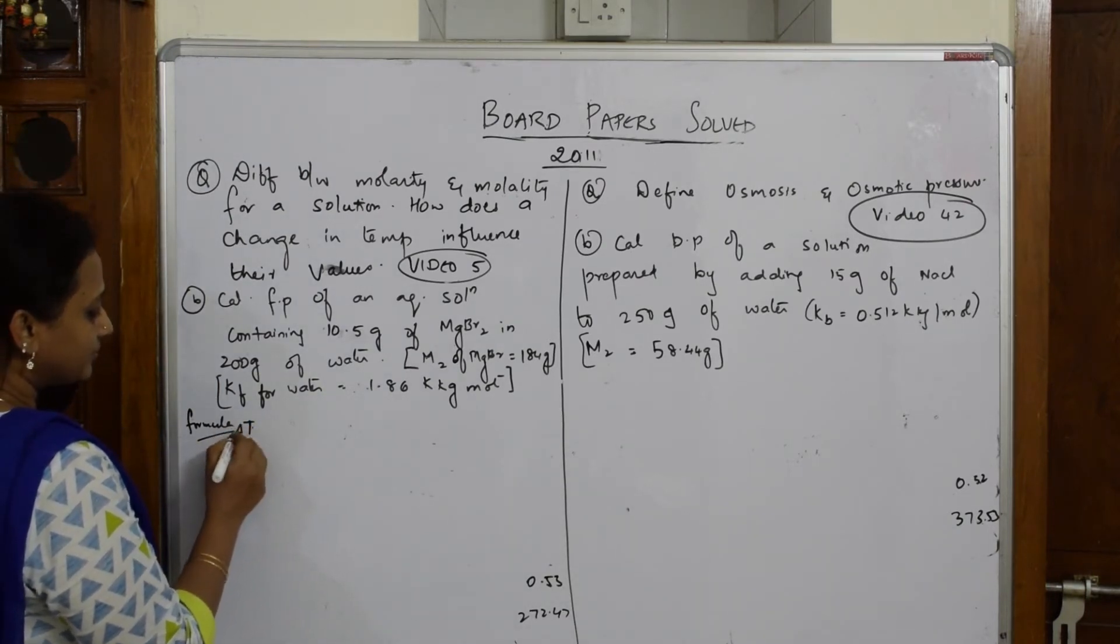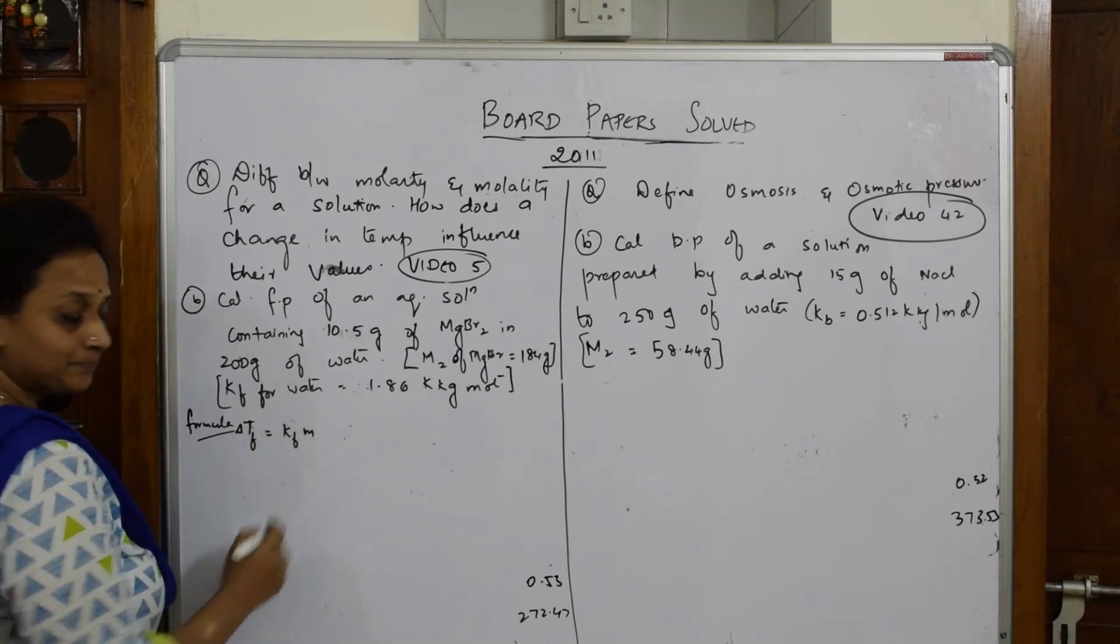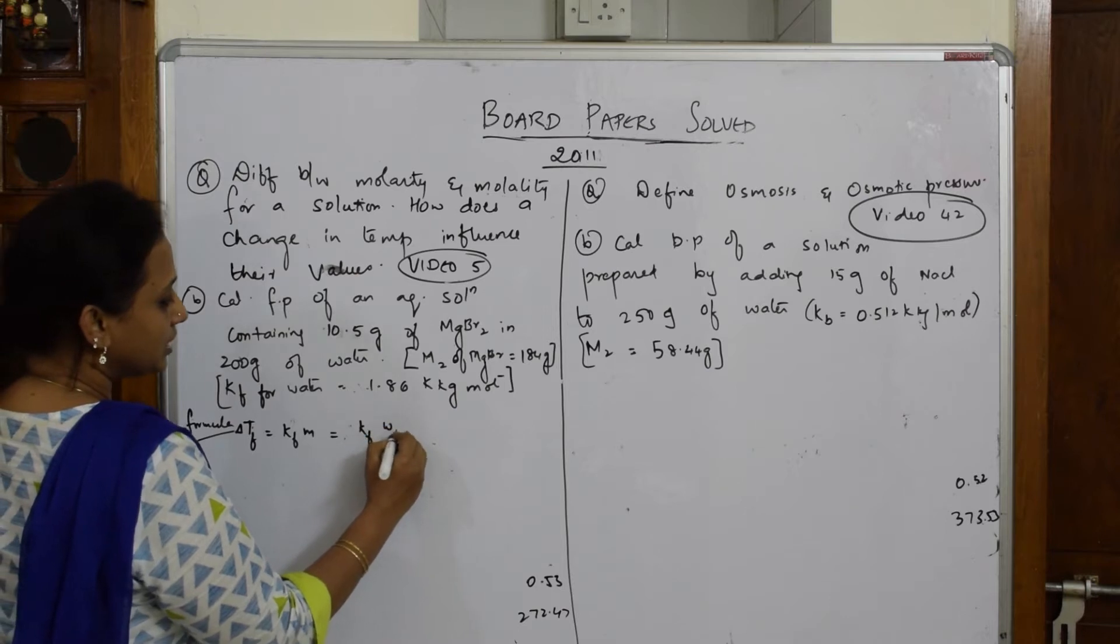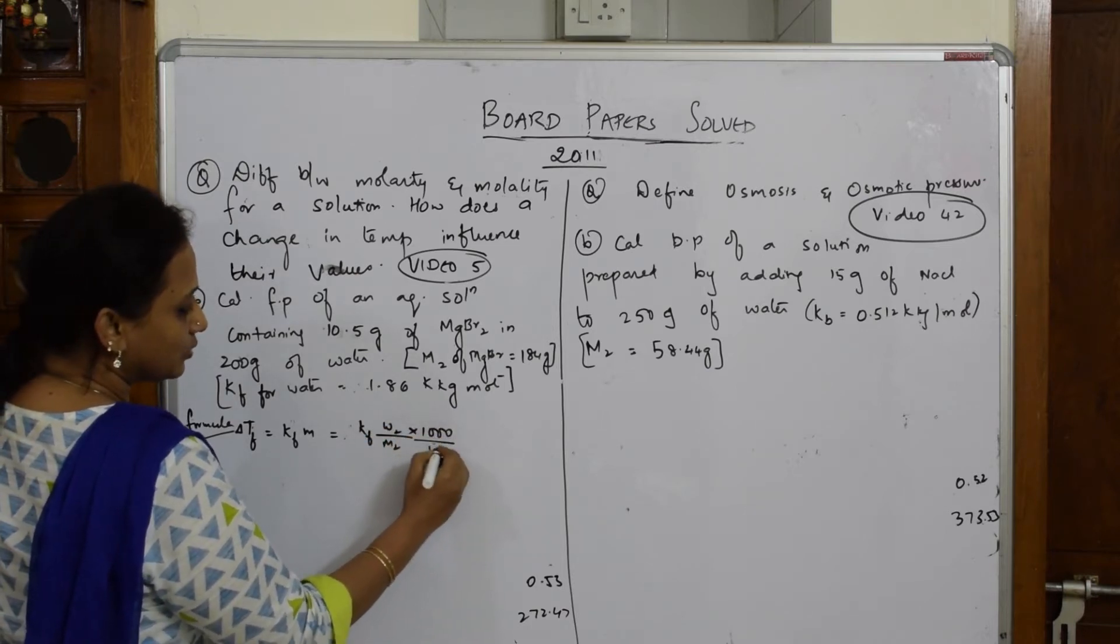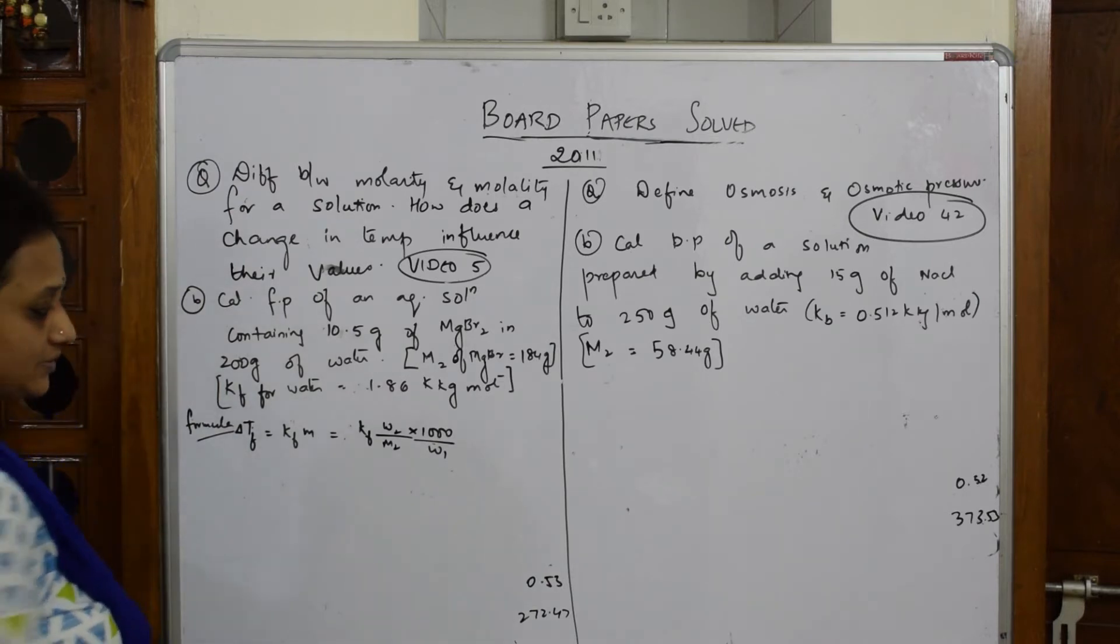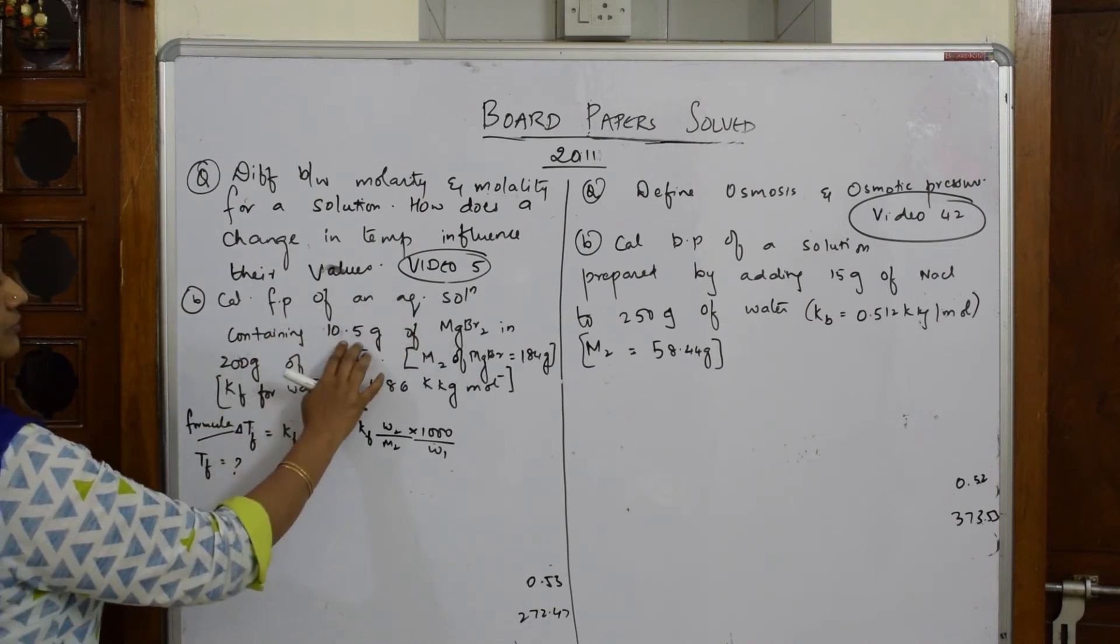Which is equal to Kf into w2 by m2 into 1000 by w1. Let's write what data is given. I have to calculate T freezing point, TF.